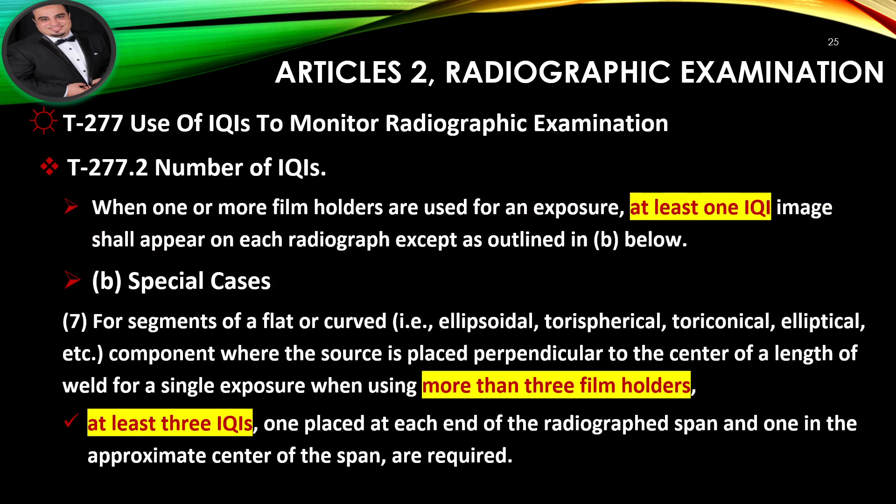Number of IQIs: When one or more film holders are used for an exposure, at least one IQI image shall appear on each radiograph. Special Cases: For segments of a flat or curved component (ellipsoidal, tori-spherical, tori-conical, elliptical, etc.) where the source is placed perpendicular to the center of a length of weld for a single exposure using more than three film holders, at least three IQIs are required — one placed at each end of the radiographed span and one in the approximate center of the span.